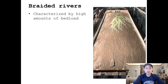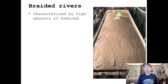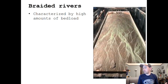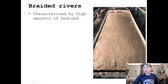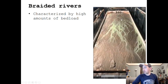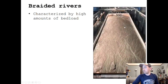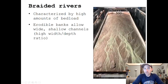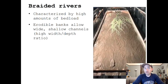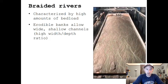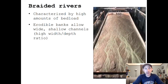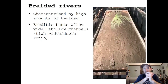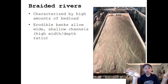Braided rivers are characterized predominantly by a high amount of bedload in transport. We talked about braided systems in the alluvial fan lecture; you can see with these dye injections in this experiment that at any given time on these braided systems, there are multiple channels active in distributing water across the valley.